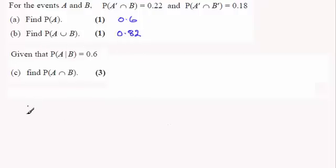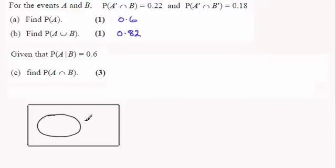We also looked at drawing a Venn diagram. Remember in the Venn diagram we had our two sets A and B. We found that the probability of not being in A and being in B was 0.22, and the probability of not being in A and not being in B was 0.18, which was the region out here.